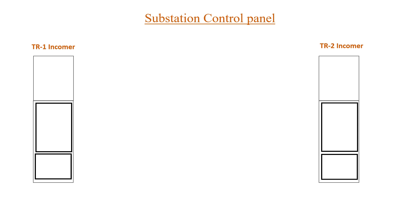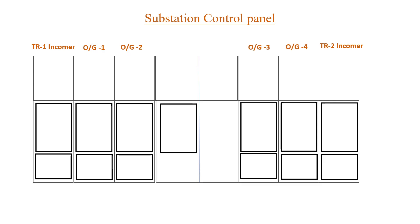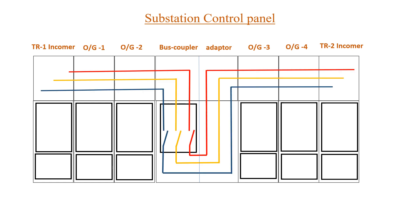This is the 11 kV panel board. We have already discussed about this kind of panel board in our PT selection video. There are incomers on both the ends of the panel and then there are different outgoing feeders. They are connected with the bus coupler and adapter system as shown over here. The busbar arrangement is something like this and we have PTs on both the incomers.